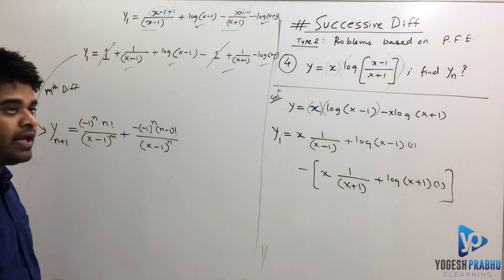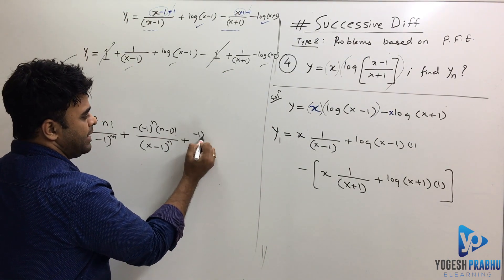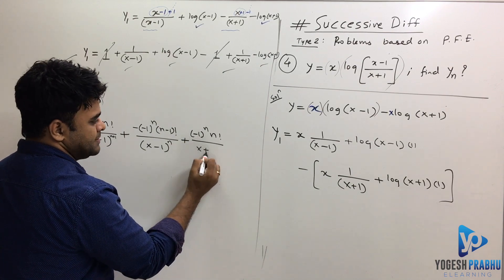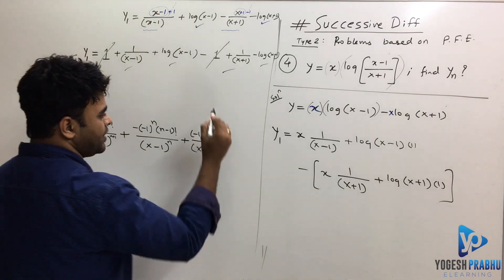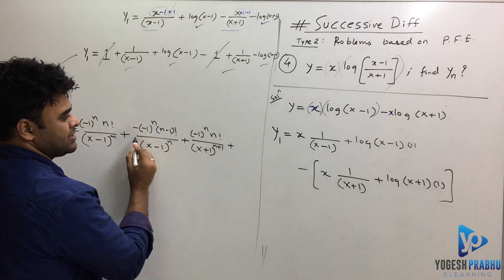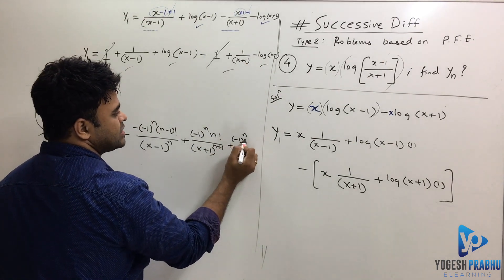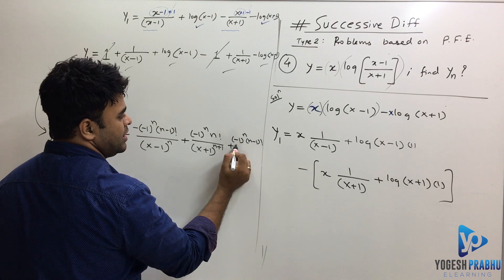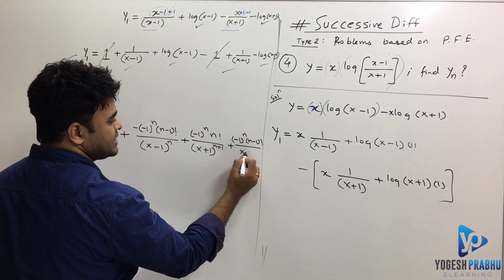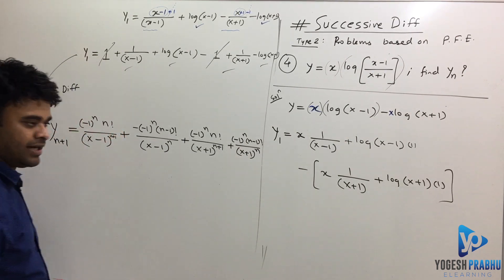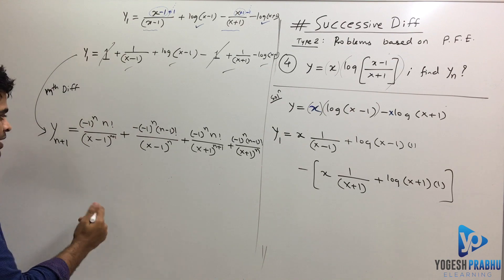For the 1/(x+1) term, the nth derivative is +(−1)ⁿ · n! / (x+1)ⁿ⁺¹. And for the −log(x+1) term — the two minuses make it plus — it becomes +(−1)ⁿ · (n−1)! / (x+1)ⁿ. You can factor out (−1)ⁿ as a common term, but this is essentially the expression for yₙ₊₁.